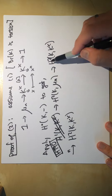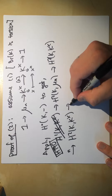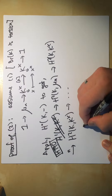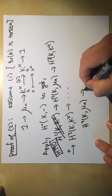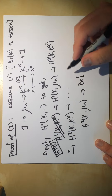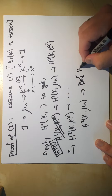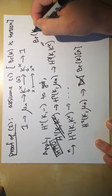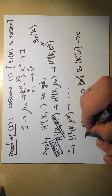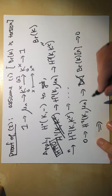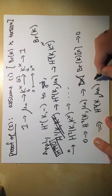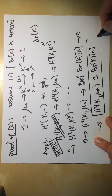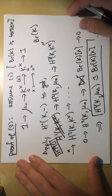Since H¹(k, k*) = 0 by Hilbert's Theorem 90, we can truncate the exact sequence. Replacing the boundary map with the kernel, we identify H²(k, μₙ) with the n-torsion of Br(k) = H²(k, Gm). This concludes the proof of claim two.